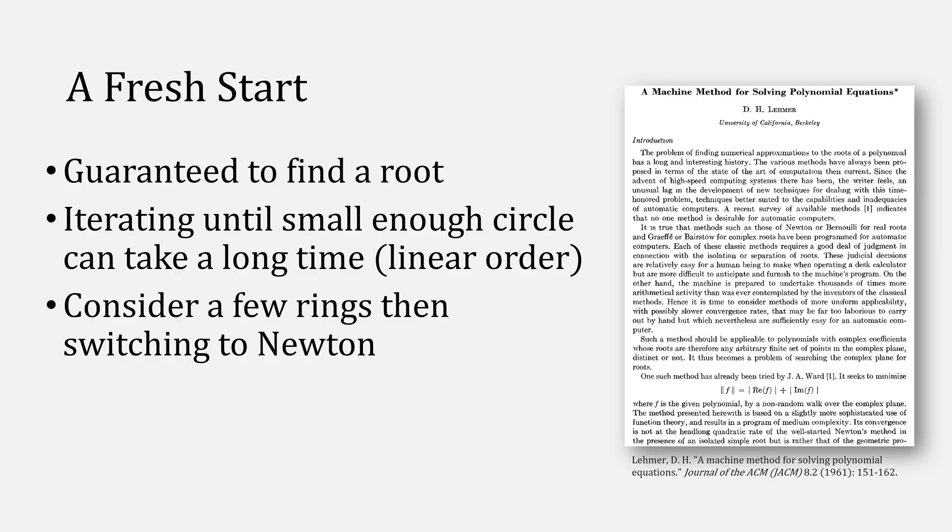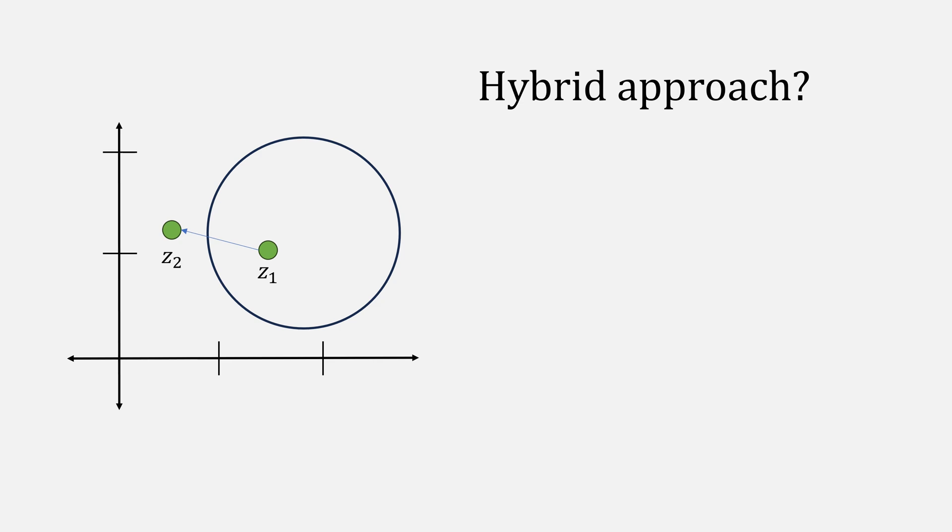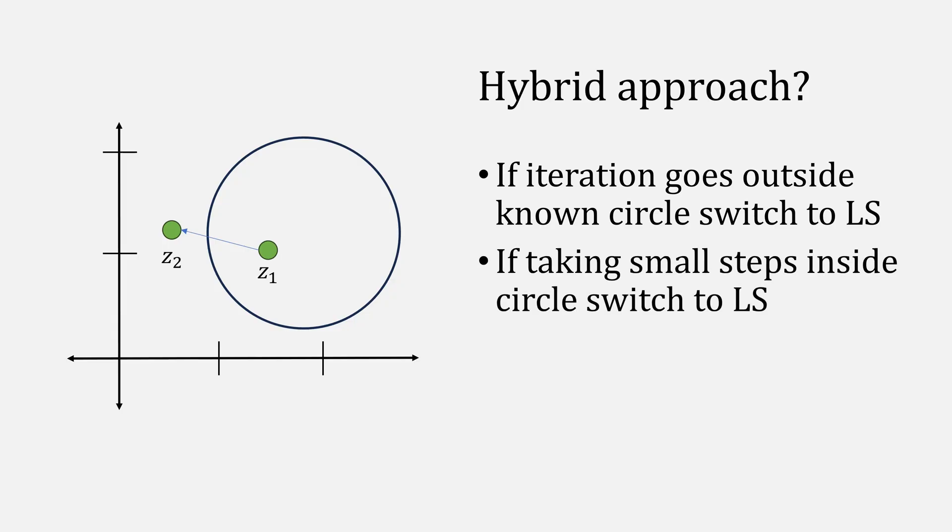What about a hybrid approach? For example, if you notice that your iterations in Newton's method are going outside of the circle that you know has the root, switch to Lemmer's sure. Also, if the iterations function is taking a very long time to converge, you might also think about applying the techniques from the Newton safe algorithm.